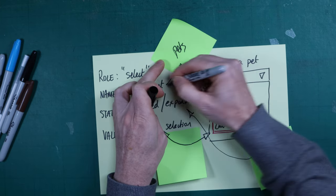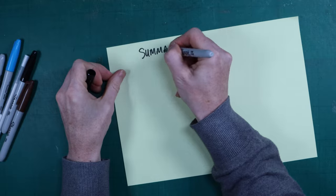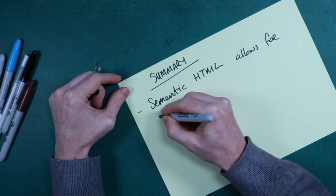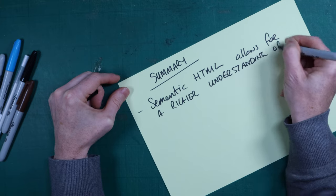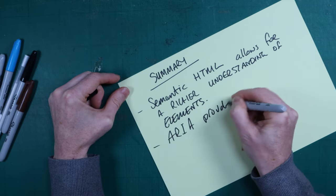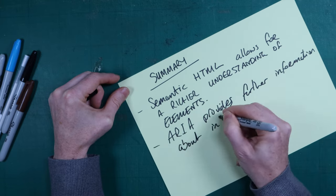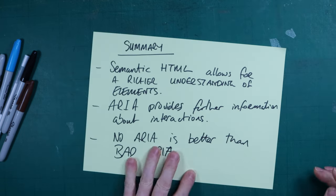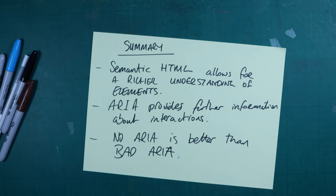So in summary, Semantic HTML provides a way for people using assistive technology to understand pages in a deeper way. ARIA provides users even more contextual information about pages, and more specifically how they can interact with elements on those pages. And finally, if using ARIA, make sure you use it correctly — no ARIA is better than bad ARIA. Thanks again for watching and see you in the next video.